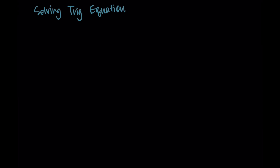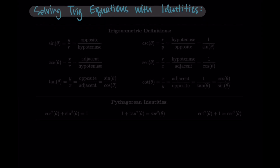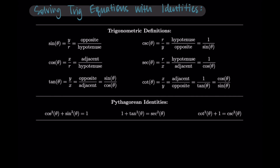Hi, and welcome. In this video, we're going to talk through solving trigonometric equations using identities. I'm going to put all of our identities up on the screen — at least the ones we have so far. We have the definitions for our six trigonometric functions, and we also have our Pythagorean identities. All of these identities are available for you to use when solving trigonometric equations.